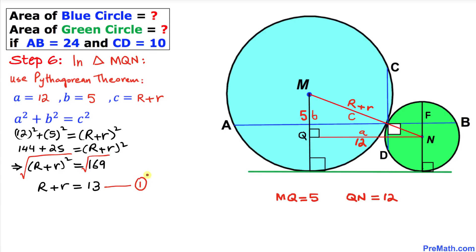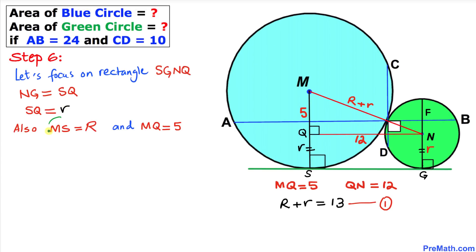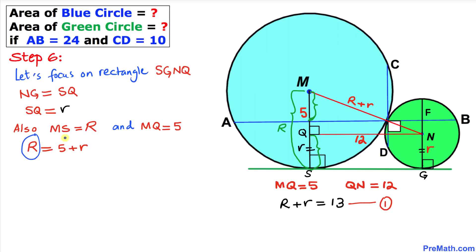Now focusing on rectangle SGNQ, by the definition of a rectangle opposite sides are equal. NG is the radius of the small green circle, so SQ equals lowercase r. We also know MS equals uppercase R and QS equals lowercase r, and MQ is 5. Therefore we can write: R = 5 + r.